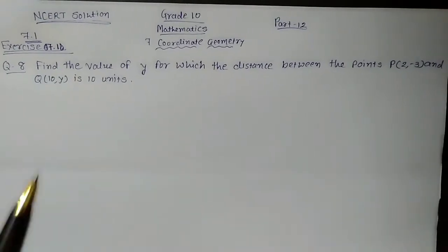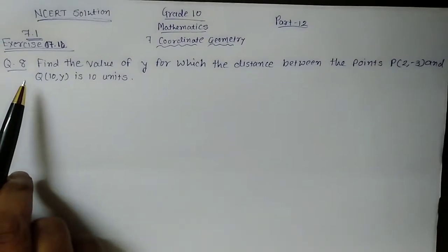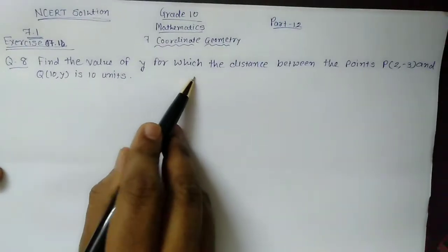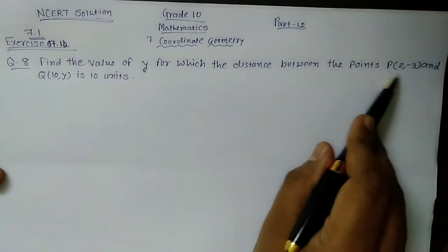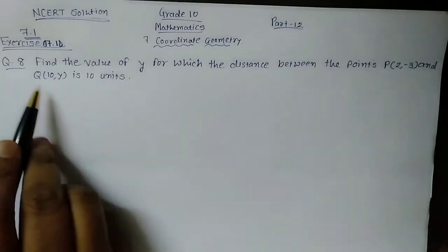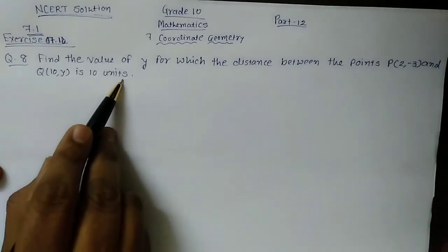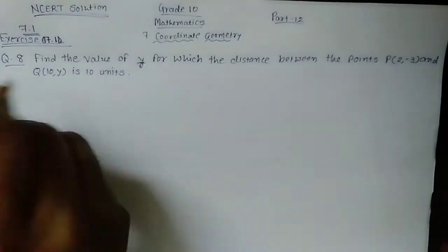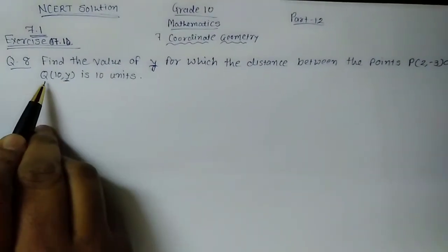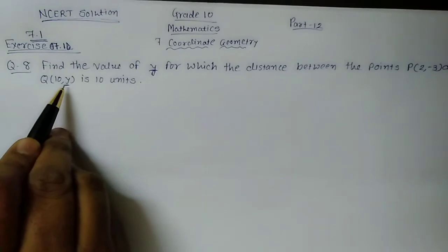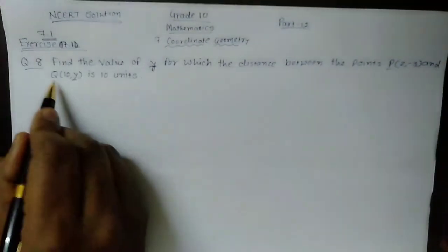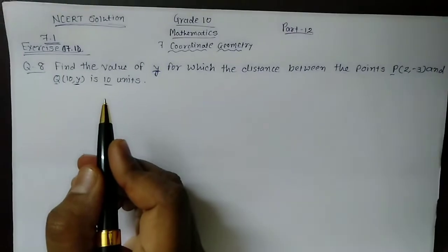This is from exercise 7.1, question number 8. Find the value of Y for which the distance between the points P(2, -3) and Q(10, Y) is 10 units. We have to find the value of Y. In Q, the Y coordinate is given, that is Q(10, Y). The distance between both these points P and Q is 10 units.